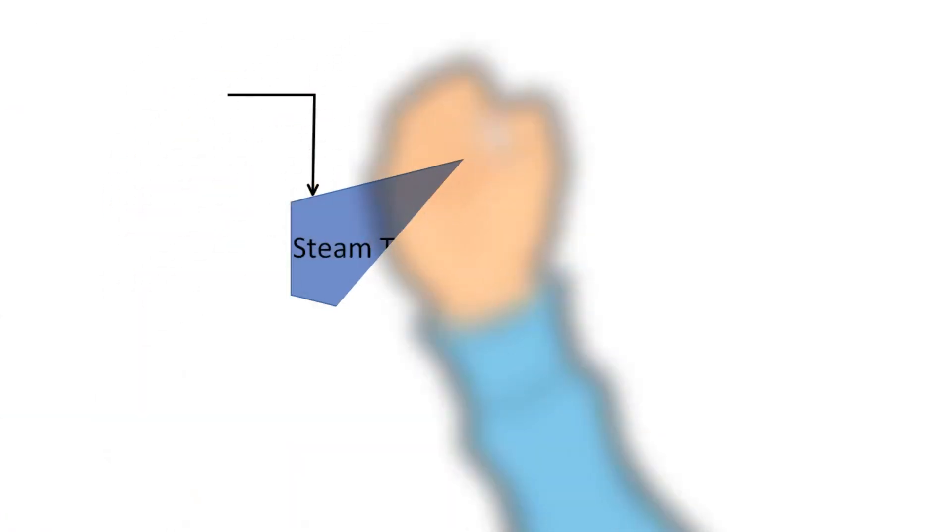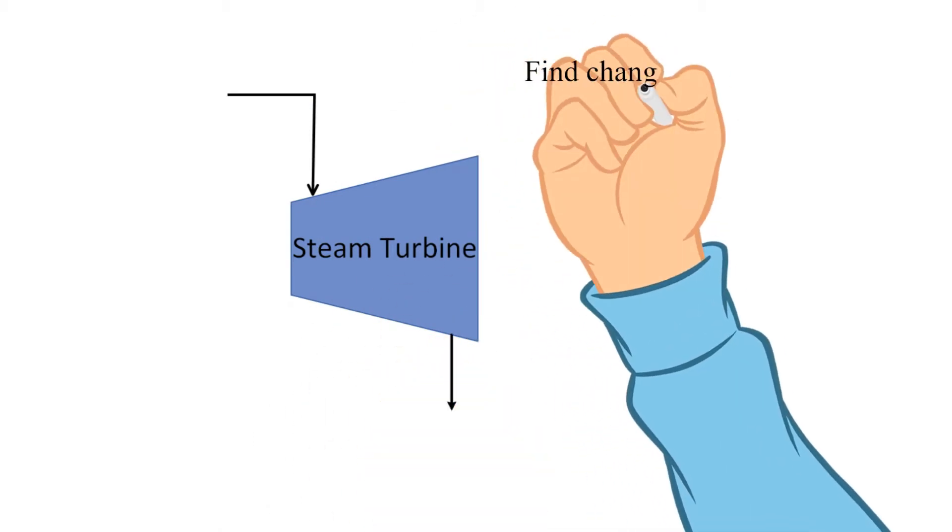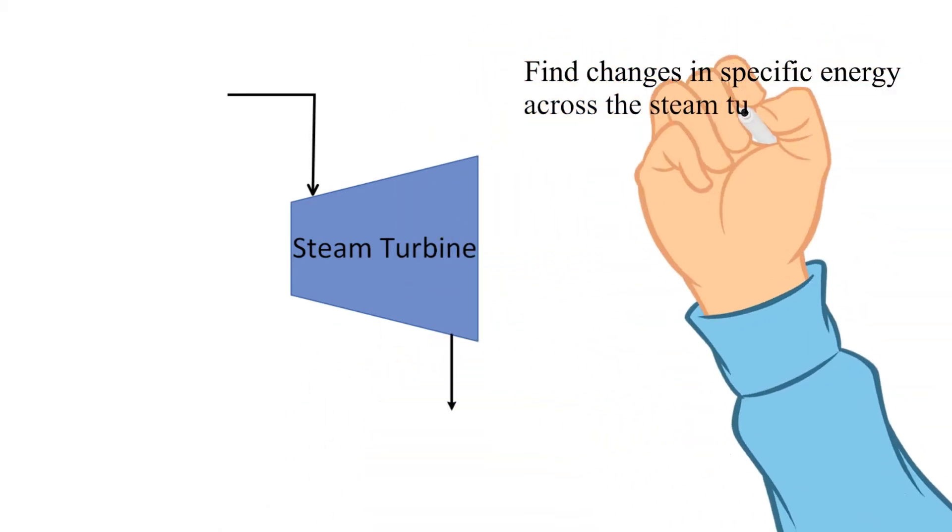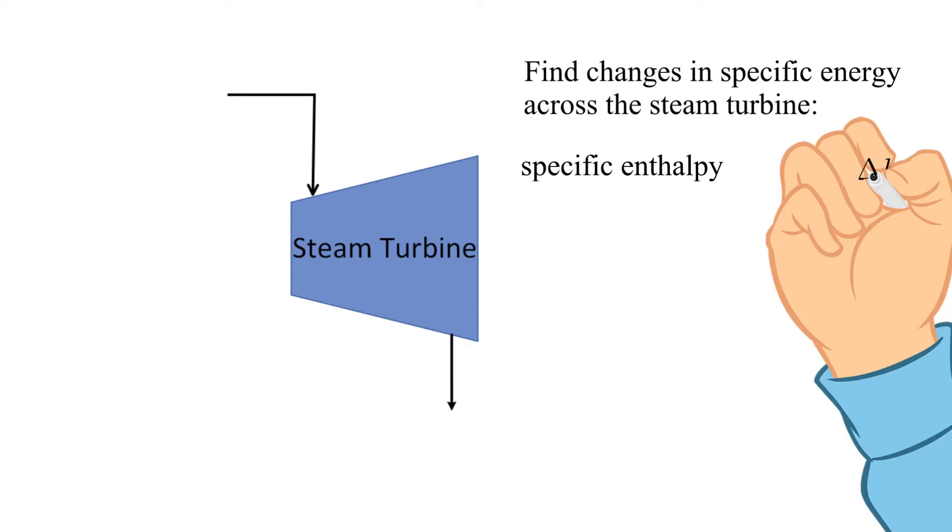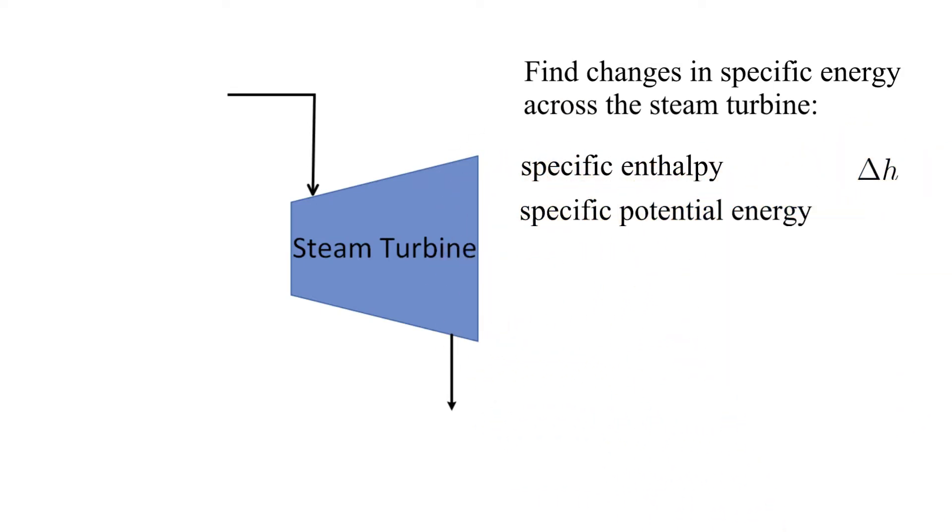Here is our steam turbine. Our goal is to find the change in specific energies across the turbine. We will be calculating the change in specific enthalpy, specific potential energy, and specific kinetic energy. We want all of these in units of BTU per pound mass.